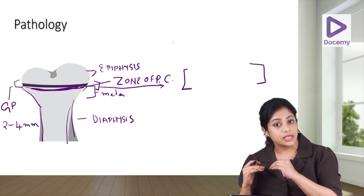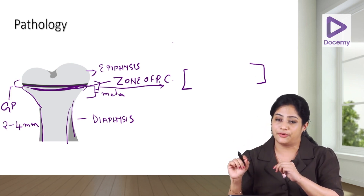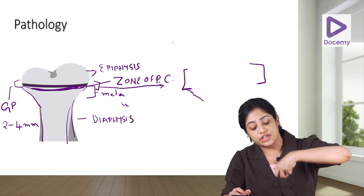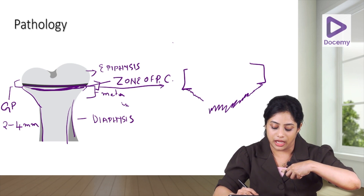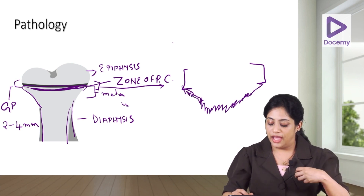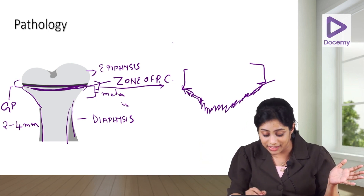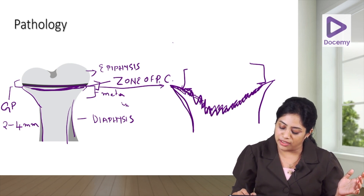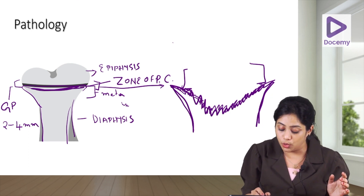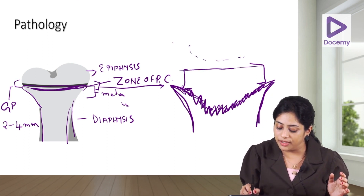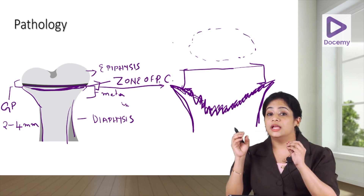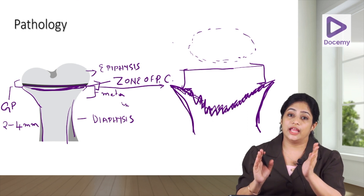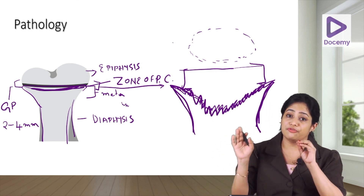The border of the metaphysis with the growth plate becomes irregular and ill-defined — this is known as fraying of the metaphysis. The pushing of osteoid onto the metaphysis results in a cup-like deformity, and the metaphysis is widened laterally — this is known as splaying. The epiphysis will also be of lower density due to poor mineralization and will have ill-defined borders. These are the key radiological findings in rickets.